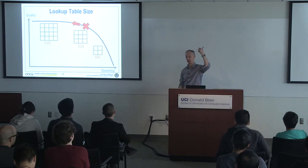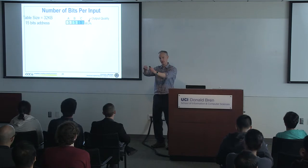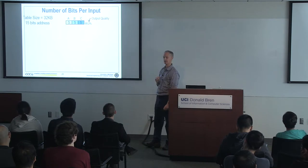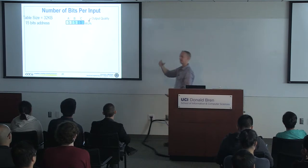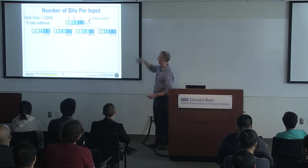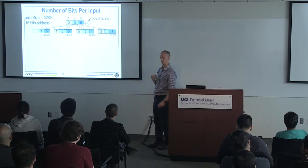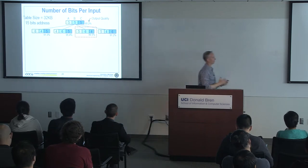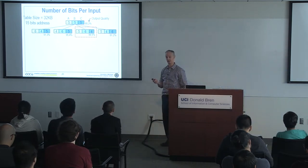The second decision is how to allocate bits across inputs. For example, with a 32K table you have 15 bits for your address. Starting with five bits per input, you measure accuracy — say 95.2%. Then you perturb: give one field more bits, one less, keep the third the same, and measure accuracy for each configuration. The best one is taken. In this case, the second input gets more bits, meaning the second input influences the output much more than the third. Inputs that matter more get more precision; inputs that matter less get less.